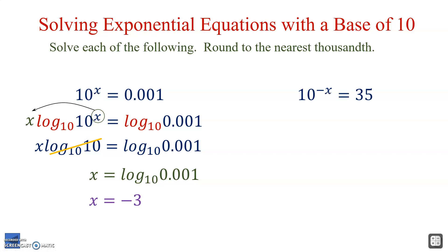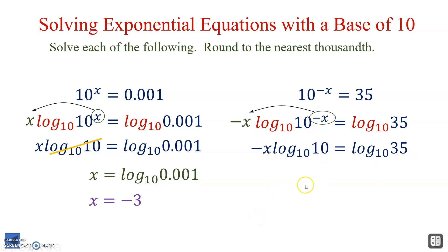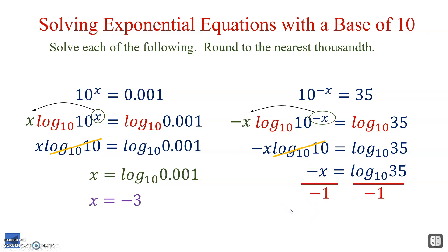Next problem: 10 to the negative x equals 35. Again, to deal with base 10, we log on both sides and the exponent comes out in front, leaving us with negative x times log 10 equals log 35. Log 10 base 10 cancels, leaving just negative x. So we divide by negative 1 on both sides, leaving x equals negative log 35.